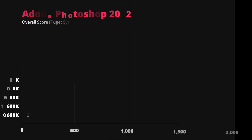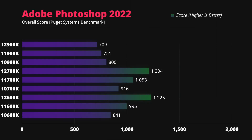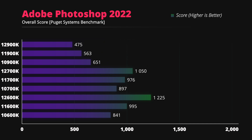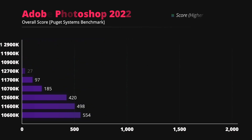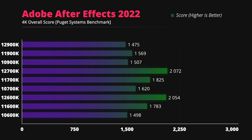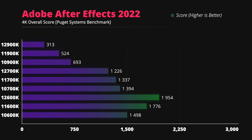Most of the professional benchmarks follow the same trend: the i5-12600K is as good or better than the i9-10900K and 11900K processors. Photo, video, coding and 3D creatives on a tight budget should consider getting an i5-12600K — it is powerful enough to do serious work.